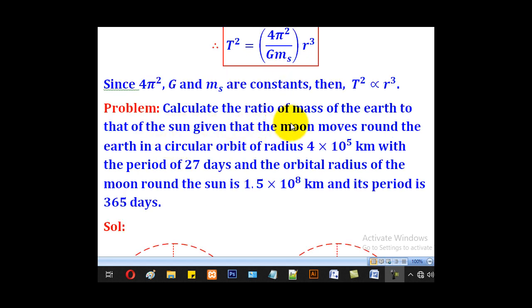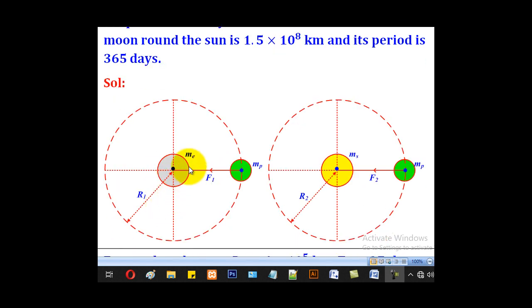Calculate the ratio of mass of the Earth to that of the Sun given that the Moon moves round the Earth in a circular orbit of radius 4×10⁵ km with a period of 27 days. And the orbital radius of the Moon around the Sun is 1.5×10⁸ km and its period is 365 days.